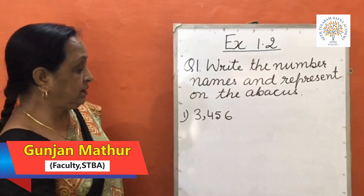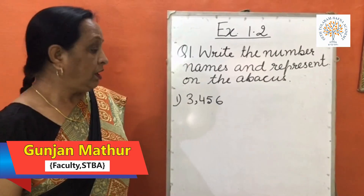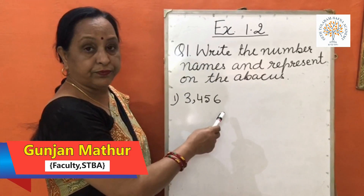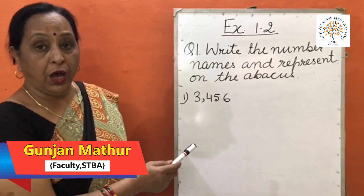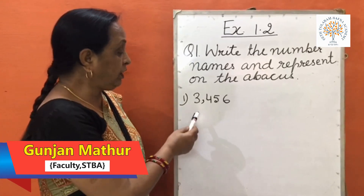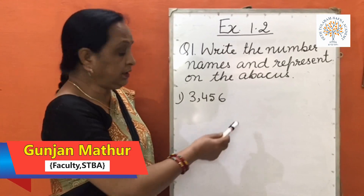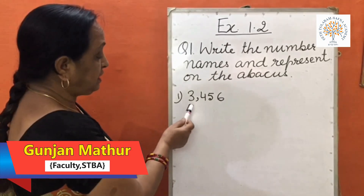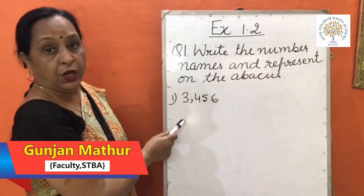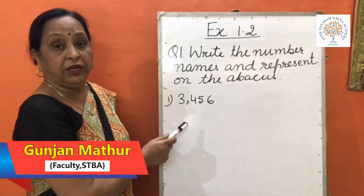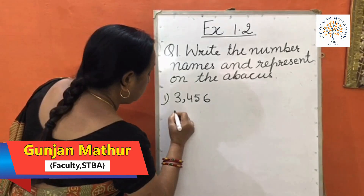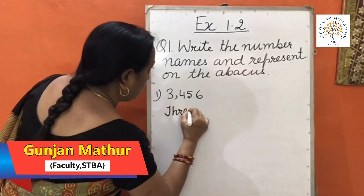Children, our first number is 3456. I am going to tell you how we write the number name for this number. The first digit is 3 and the place value of 3 is 3000, so value-wise it becomes 3000. We write here 3000.